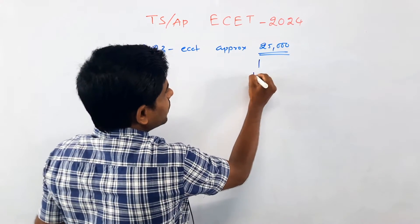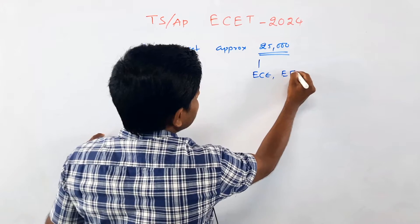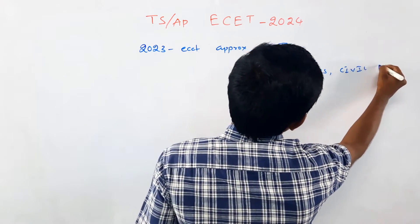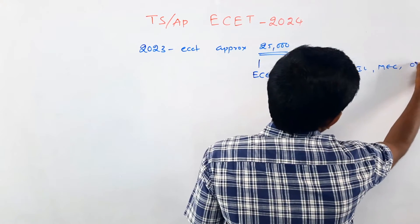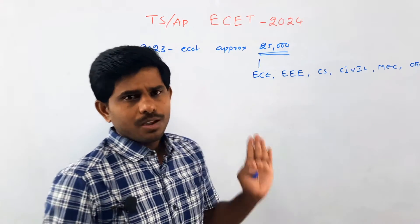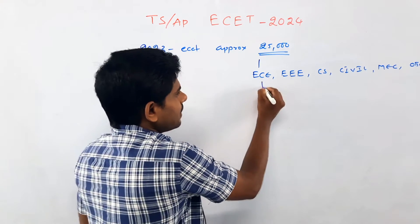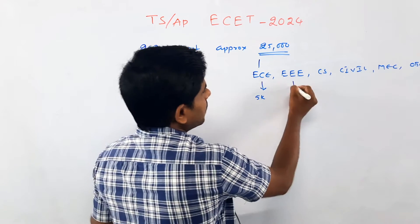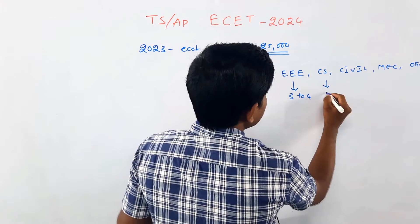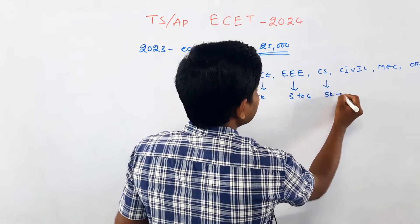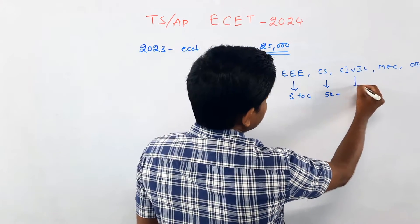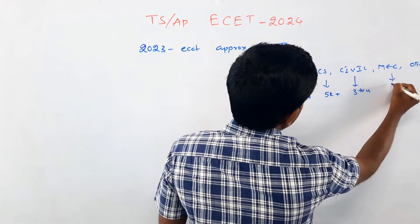This is the first branch: ECE, EEE, CS, Civil, Mechanical. Others like Mining, Textile, etc. ECE is 5,000. EEE — 3,000 to 4,000 members. CSE and ECE is 5,000 plus. Civil — 3,000 to 4,000 to 1,000 to 2,000.